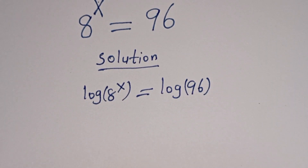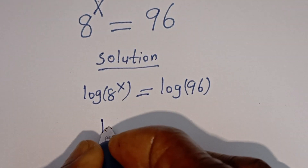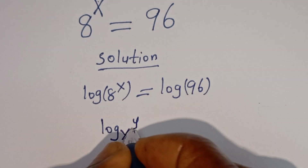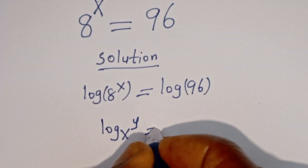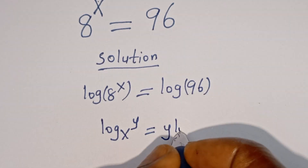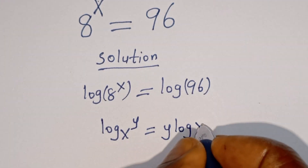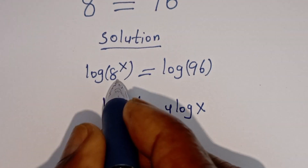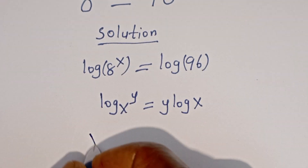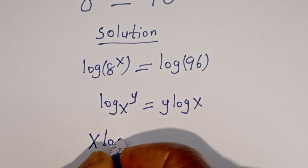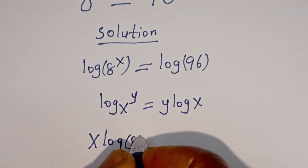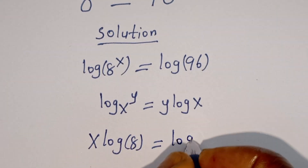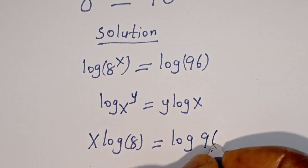Now take note of this: if you have log x to the power of y, this is equal to y log x. Applying this rule, the equation can be written as s log h is equal to log 96.